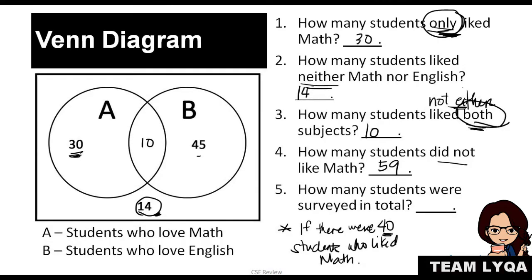Next question: How many students were surveyed in total? We just add them all up — 30, plus 10 (the intersection), which is 40, plus 45, which is 85, plus 14, which gives us 99. So the total number of students surveyed is 99.